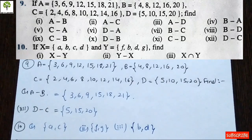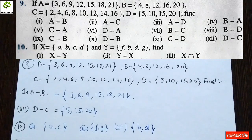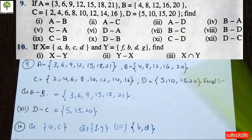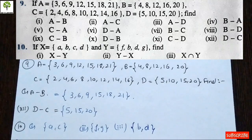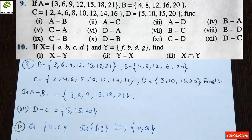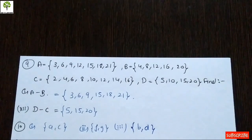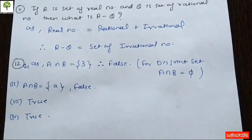For question 10, X is a set with elements {a, b, c, d} and Y is a set with elements {f, b, d, g}. For the first part X minus Y, the common elements are b and d, so the answer is {a, c}. For the third part, the intersection of X and Y, the common elements are b and d, so X intersection Y = {b, d}.